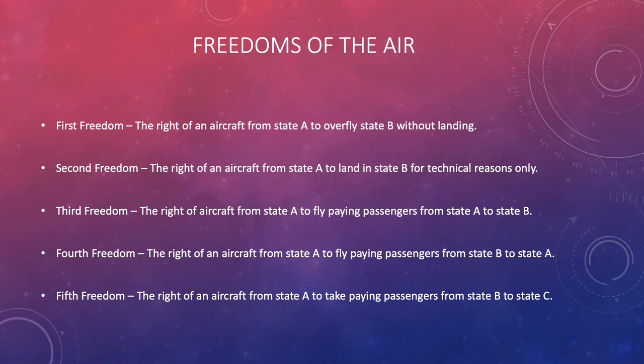The first freedom is the right for an aircraft from State A to overfly State B without landing. For example, an aircraft flying from the UK to Spain would more than likely have to fly over France — with State A being the UK and State B being France, State A can legally overfly State B without any issues. The second freedom is the right for an aircraft from State A to land in State B for technical reasons only. For example, flying from the UK to Spain, if there was a technical issue, the aircraft would be able to land in State B without prior permission for that technical issue or emergency.